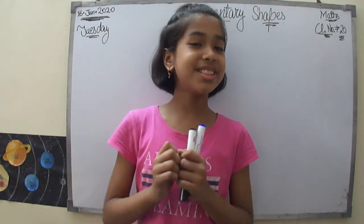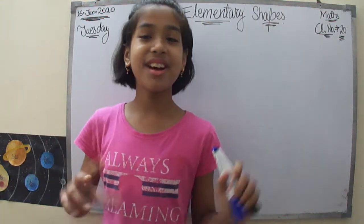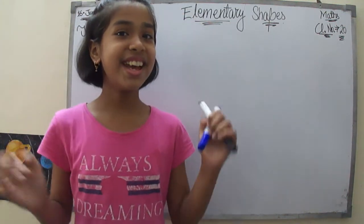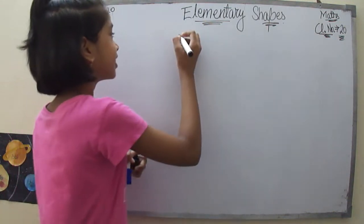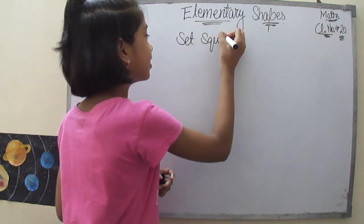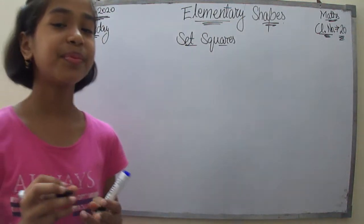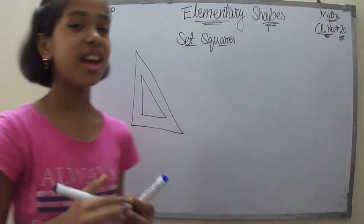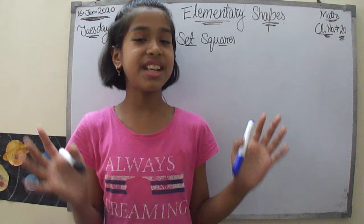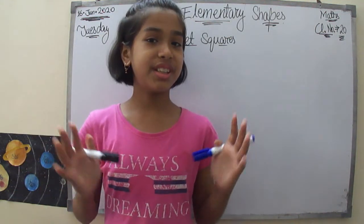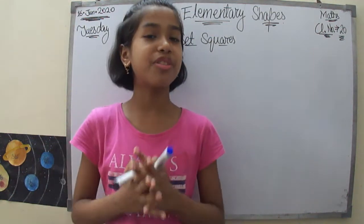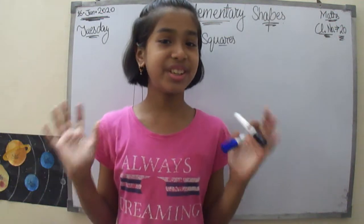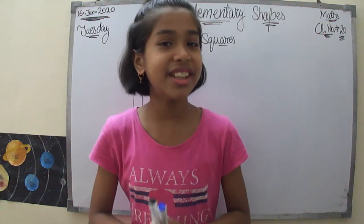Before starting, let's meet two instruments from the geometry box — the set squares. I had talked about these set squares in one of my videos on the topic of geometry, the previous topic of maths. You can go through that video by clicking on the 'i' button.